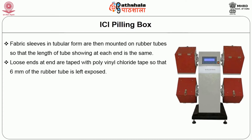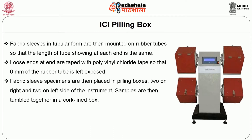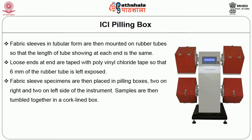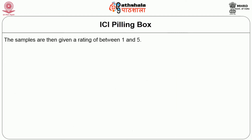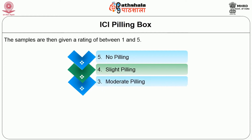Loose ends are taped with polyvinyl chloride tape so that 6 mm of the rubber tube is left unexposed. Fabric sleeve specimens are then placed in the pilling box instrument, two on the right and two on the left side of the instrument boxes. Samples are then tumbled together in a cork-lined box. The usual number of revolutions used in the test is 18,000, which accounts for 5 hours. The specimens are removed after 5 hours from the tubes and viewed using oblique lighting to throw the pills into relief. The samples are then given a rating of 1 to 5, where 5 represents no pilling, 1 represents very severe pilling, and others lie in between.